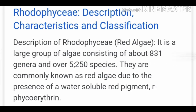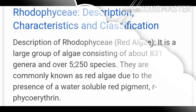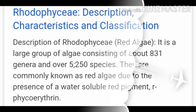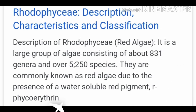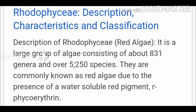The characteristic red color is due to the pigment phycoerythrin, and other pigments are chlorophyll A and D. Reserve food is in the form of floridian starch, which is similar to amylopectin and glycogen. So we store food in floridian starch.